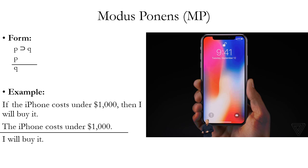Now we're going to look at the actual rules of inference — specifically the first four implication rules. The first is called modus ponens, abbreviated MP. The generic form has a conditional P horseshoe Q as one premise, and P — the antecedent of that conditional — as another premise. If you have those as premises, you can conclude that Q must be true.